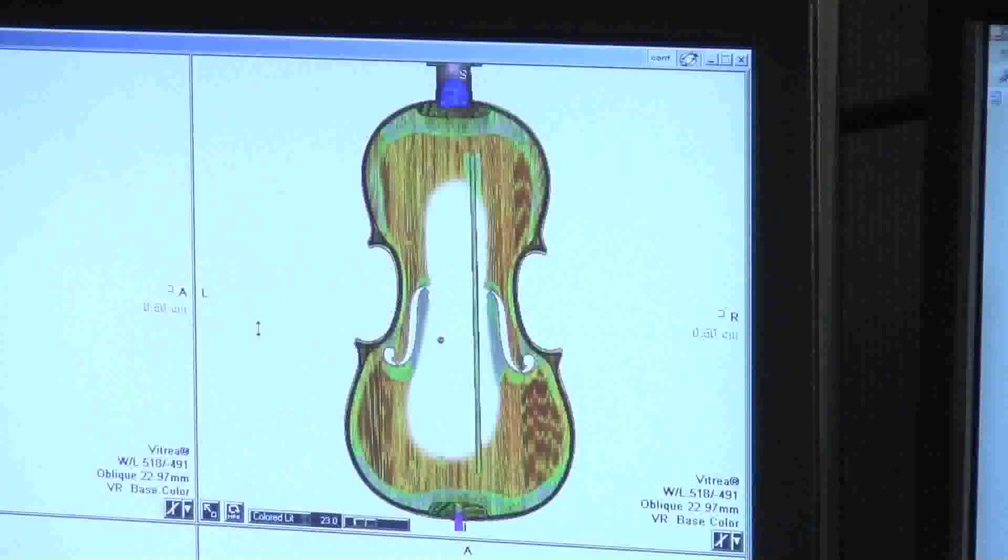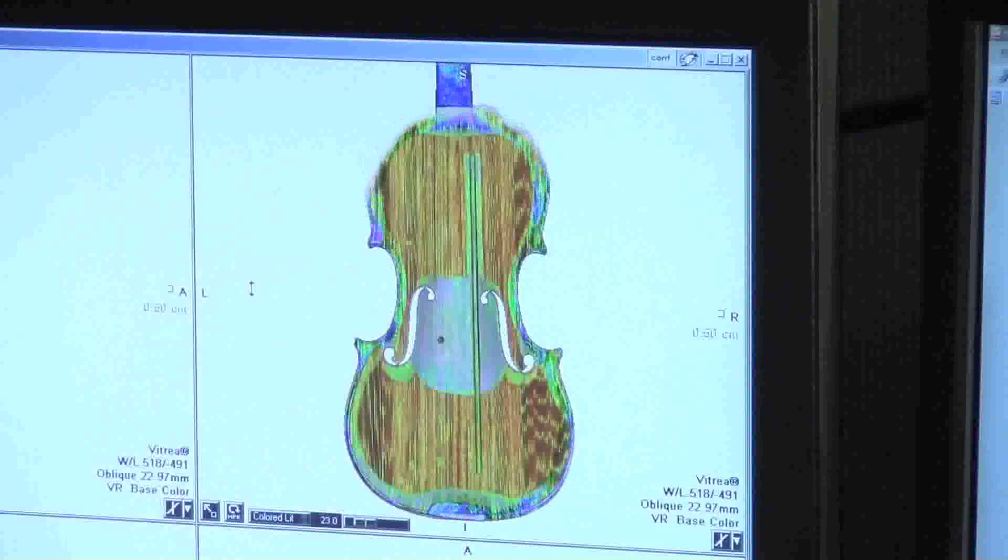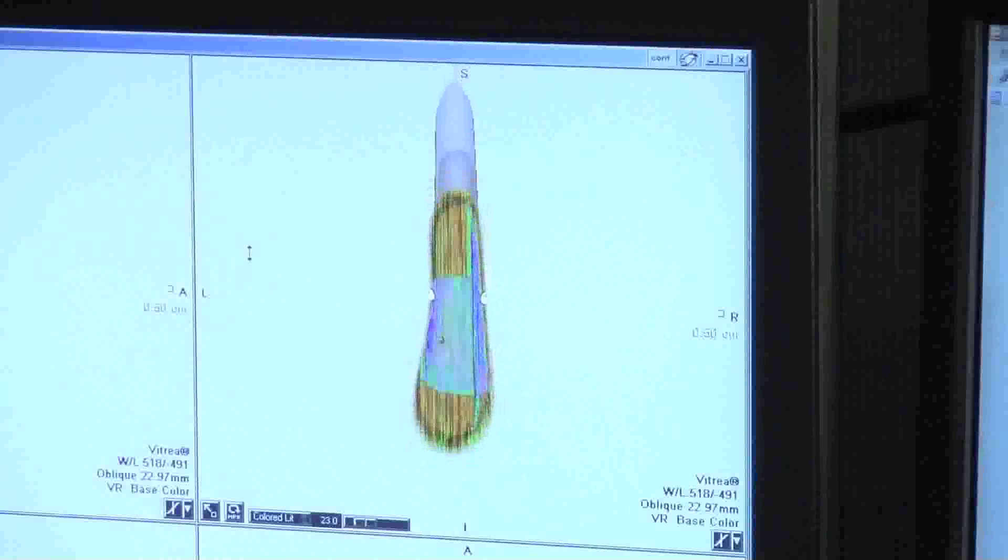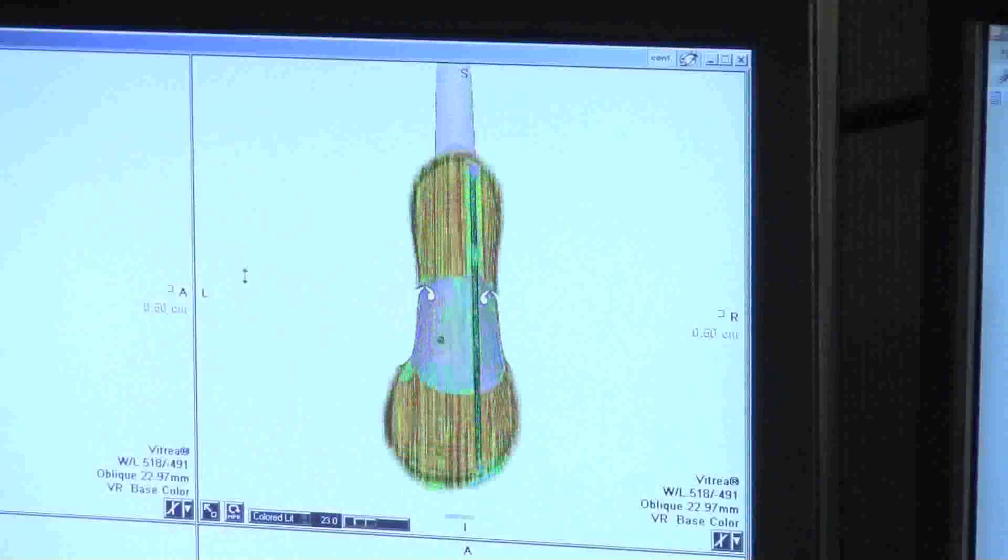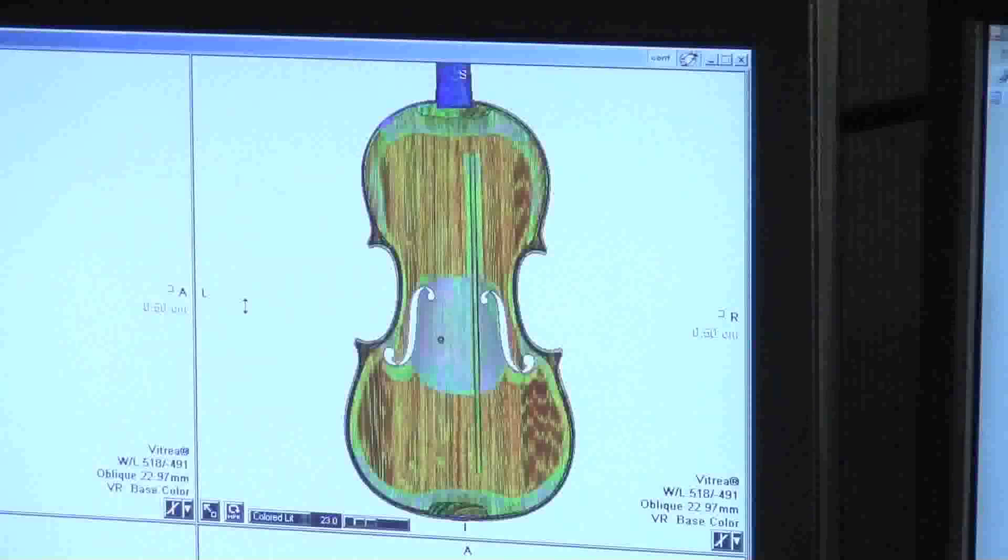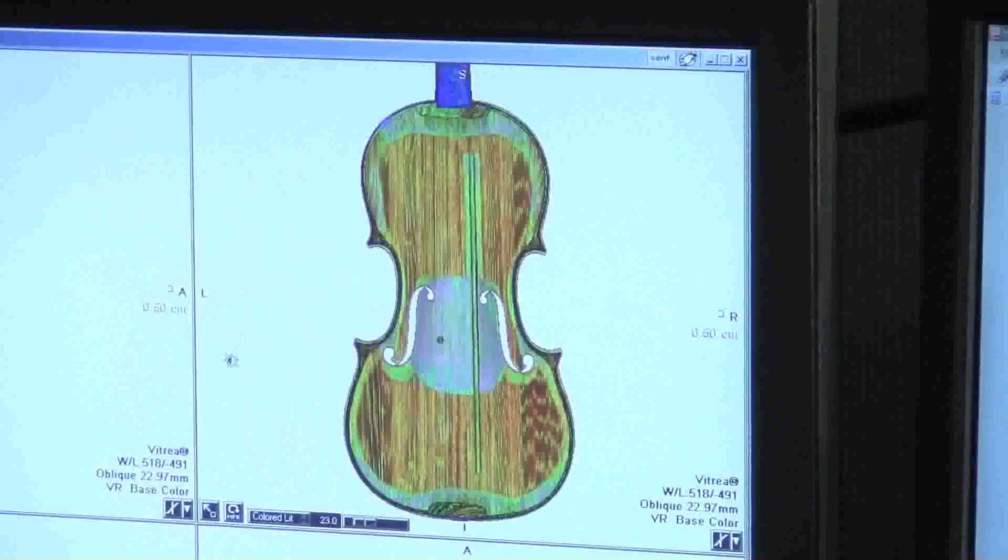And then as we scroll through the data set, we can go through the center of the violin and then look at the inside of the front plate, which these colors are much less dense. The yellows and the reds and the browns are much less dense.